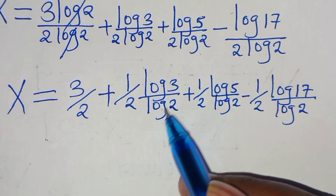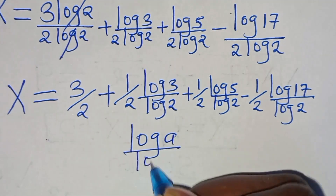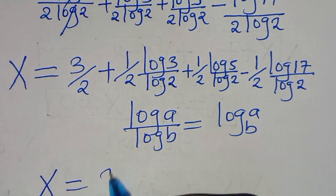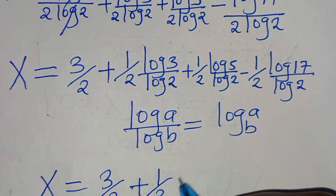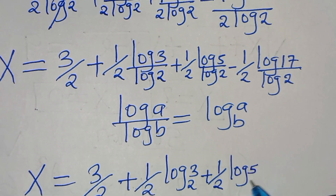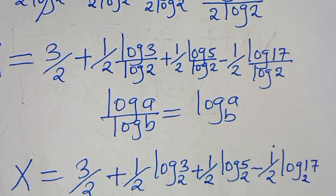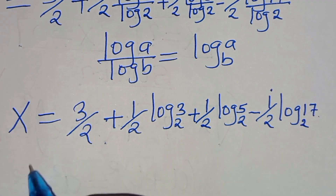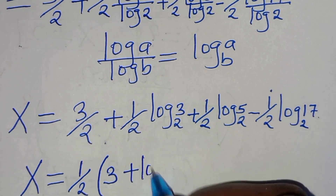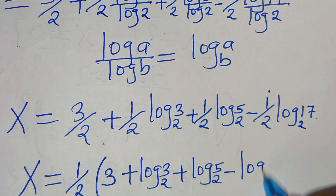Now log 3 over log 2, log 5 over log 2, and log 17 over log 2 are each in change-of-base form. So we have x equals 3 over 2, plus one half log₂3, plus one half log₂5, subtract one half log₂17. Factoring out one half gives x equals one half times (3 plus log₂3 plus log₂5 minus log₂17).